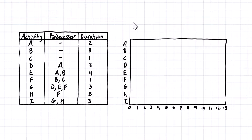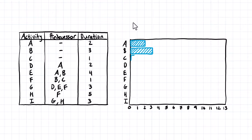To get started, let's start at the top. Activities A, B, and C have no predecessor, so they're going to start at the very beginning of the project. Activity A is two days, so we start at zero and count over two days. Activity B also starts at zero and is three days in duration. Activity C also starts at zero and is just one day long.